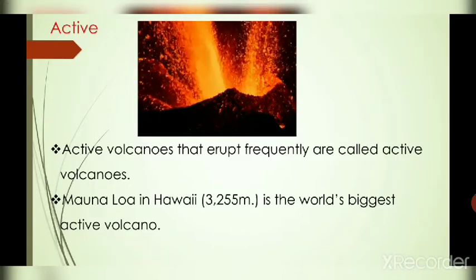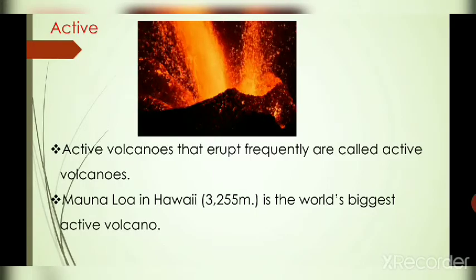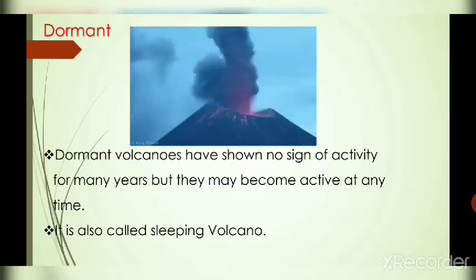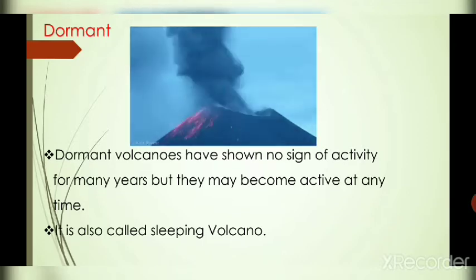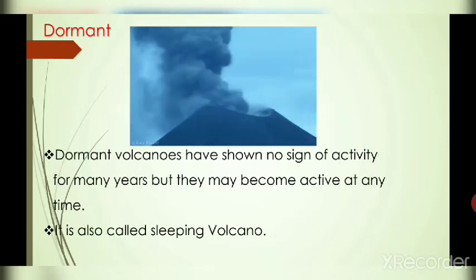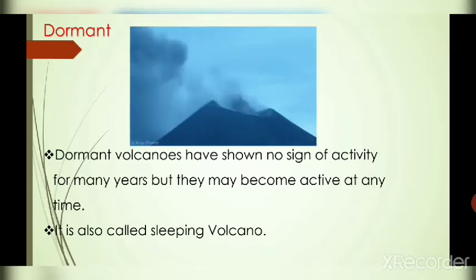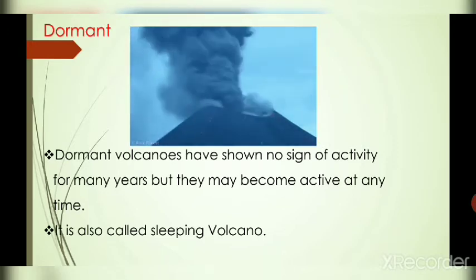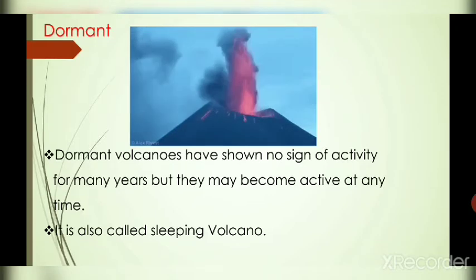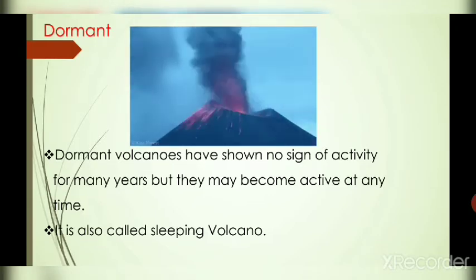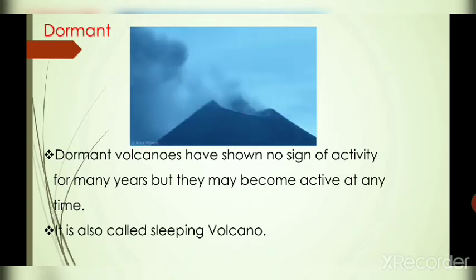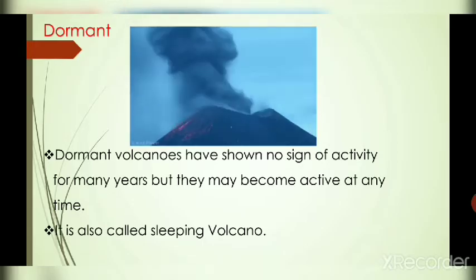The world's biggest active volcano is Mauna Loa in Hawaii at 3,255 meters. Next is dormant volcano. Dormant volcanoes have shown no sign of activity for many years, but they may become active at any time. They are also called sleeping volcanoes. Examples of dormant volcanoes are Vesuvius Mountain of Italy, Mount Fujiyama in Japan, and Mount Krakatoa of Indonesia.